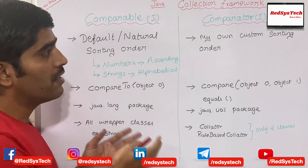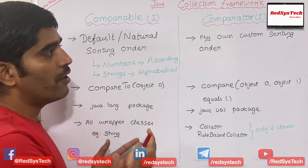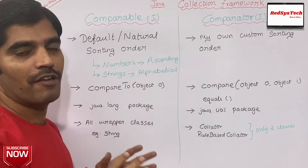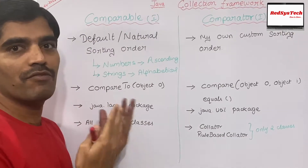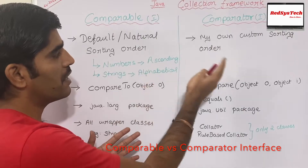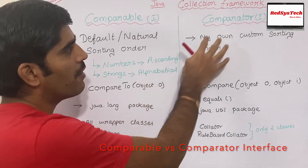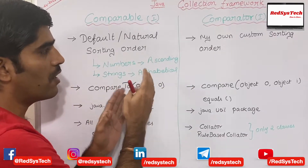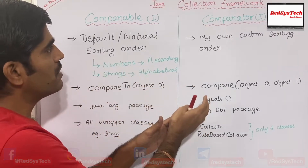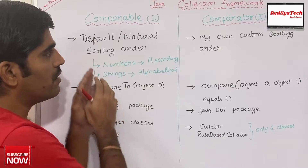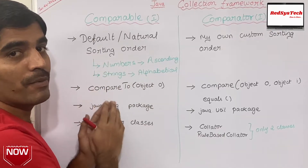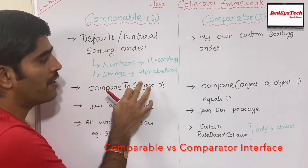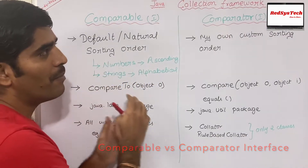On the other hand, if I want to go for my own custom sorting order — let's say I want to define descending order or some different order — then I have to go for comparator interface. So both are mainly used to get sorting, but the difference is that comparable interface gives a default or natural sorting order: ascending for numbers and alphabetical for strings. But in the case of comparator, we can define our own custom sorting order.